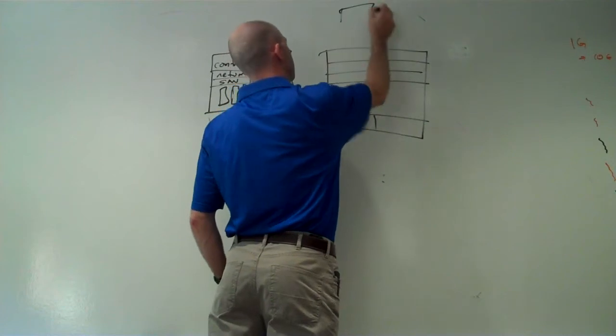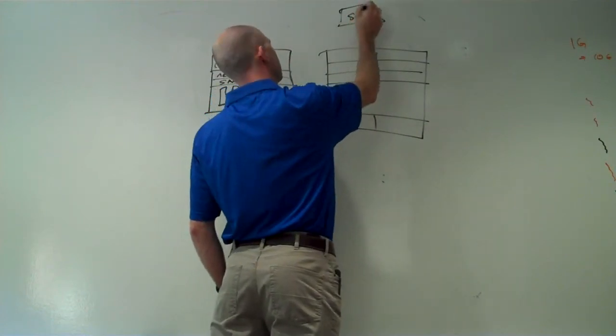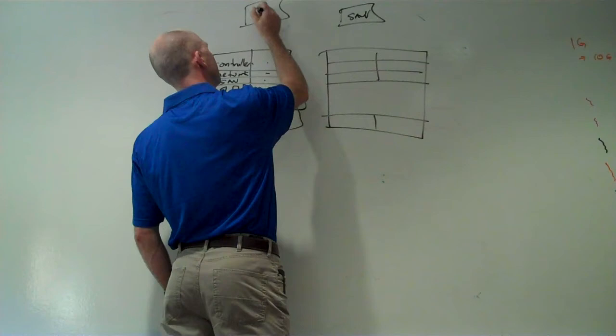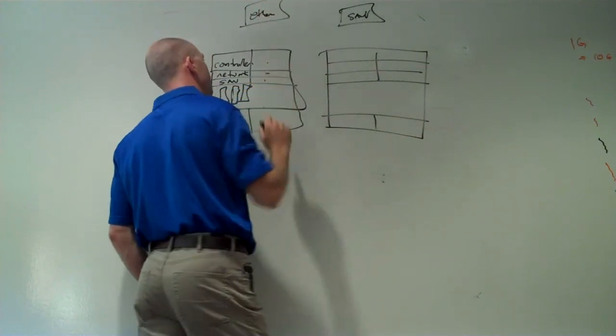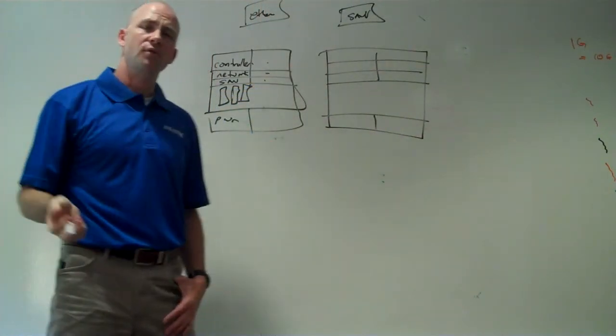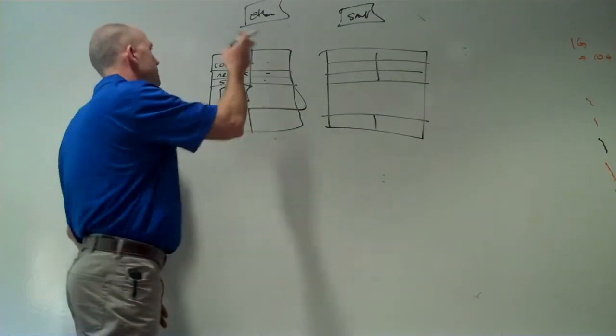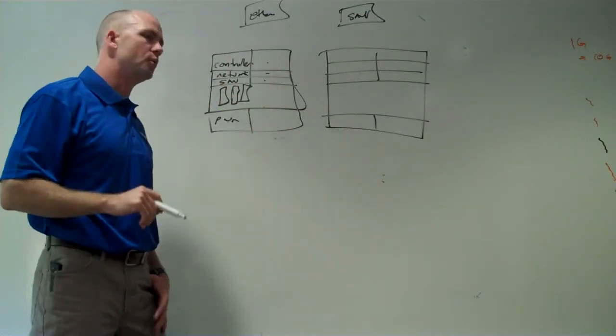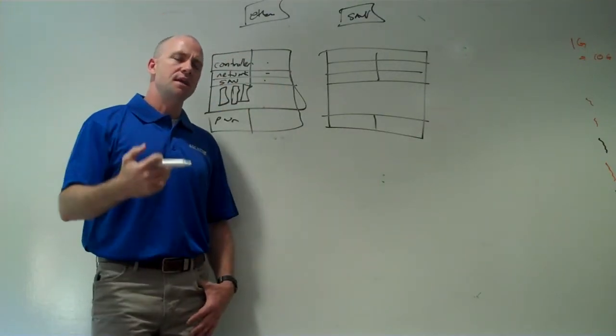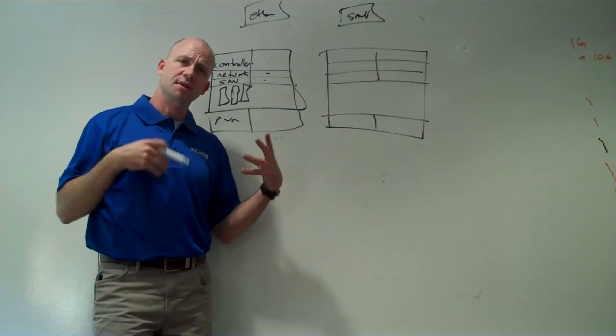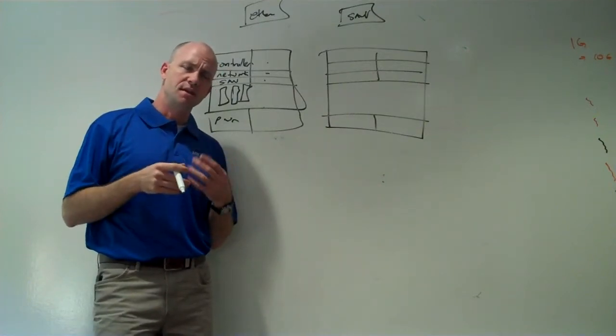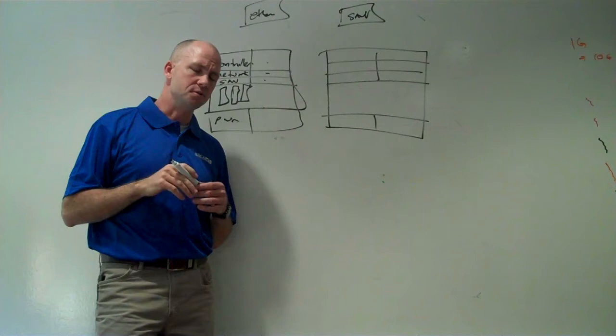Now in addition to this, we have to have a storage area network for all the storage to connect to. We have to have an Ethernet network. And all these have to be redundant and reliable as well. And then we have to have an overarching management system that will go into each of these management controllers and control them.